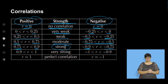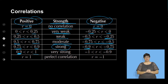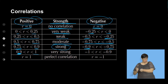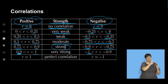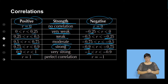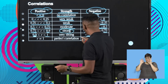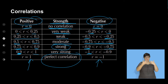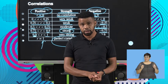Very strong correlation is 0.9 to 1. And if it's negative, between negative 1 and negative 0.9, that will be strong negative correlation. Lastly, perfect correlation is 1 (positive perfect correlation) and negative 1 — those are our two perfect correlations.